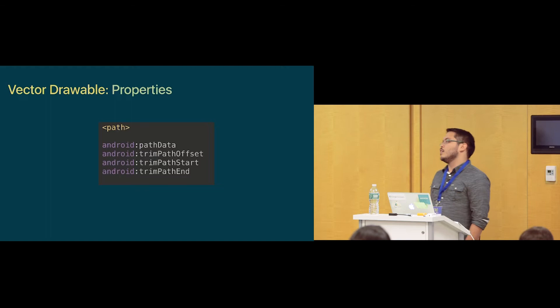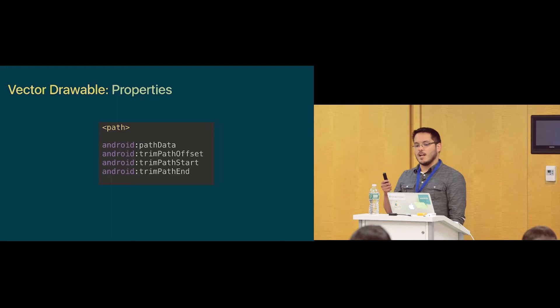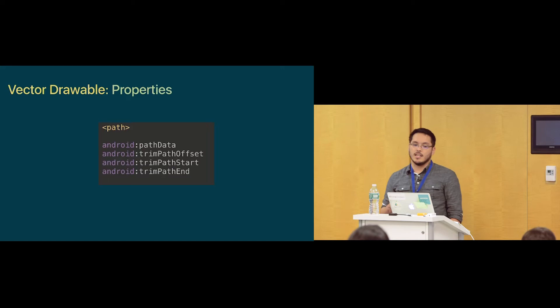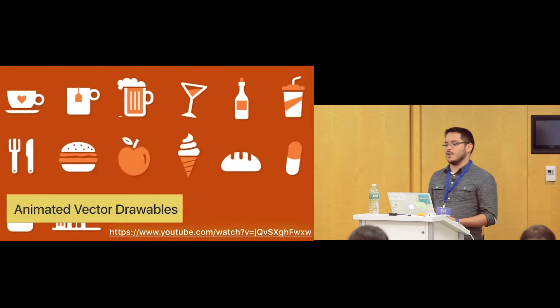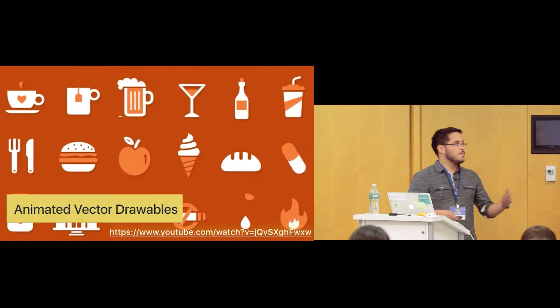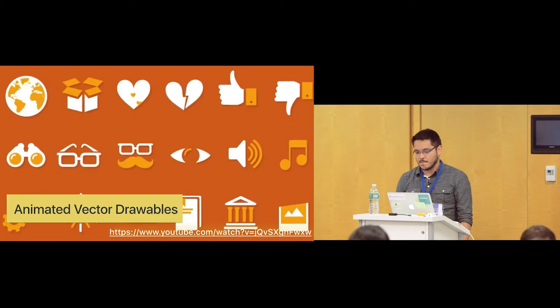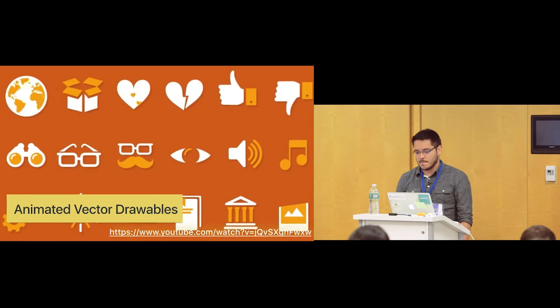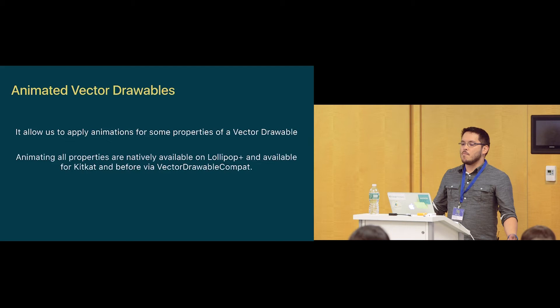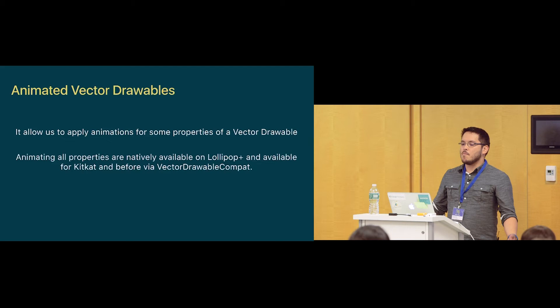I'm going to go through an example that shows how we can do animation with trim path offset, trim path start, and trim path end. Then we'll see another example with path data animations. The coolest thing about animated vector drawables is that we can play with very fine detail of an image — all those animations on screen can be done easily just by telling the drawable where to go, how to rotate, and how to move.